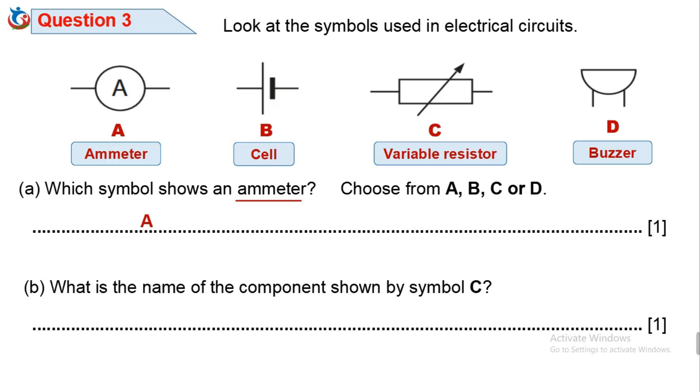Question 3b. What is the name of the component shown by symbol C? From the symbols we already identified and named, symbol C is variable resistor.